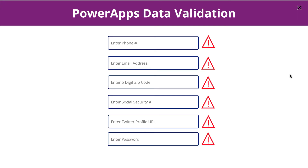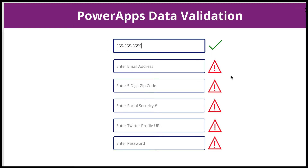So let's take a look at what I mean by data validation. A common scenario is you have some inputs in a form in Power Apps, and you want to make sure for certain things like phone number that they're entering it in the correct format. For example, maybe you want three digits separated by a hyphen each time, to make sure that's consistently entered in that format for data integrity purposes. Other use cases might be email addresses, zip codes, socials — things like that. So that's what we mean by data validation.